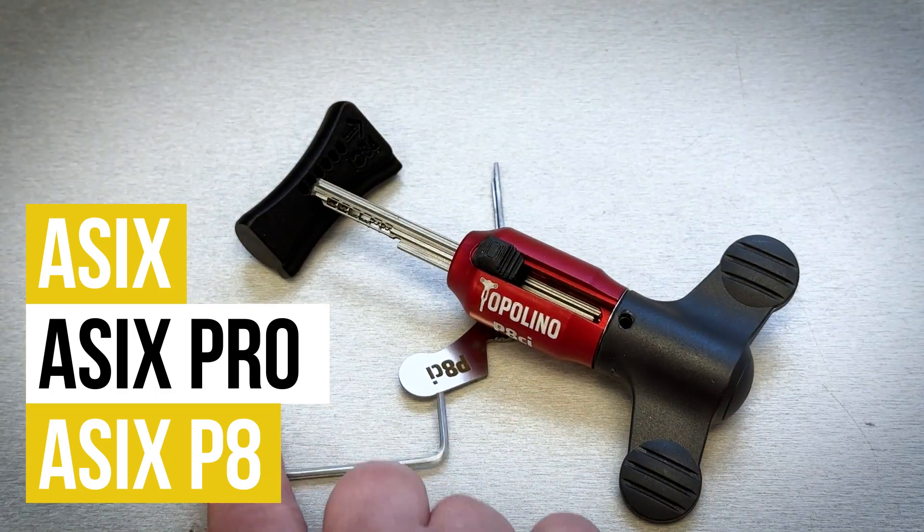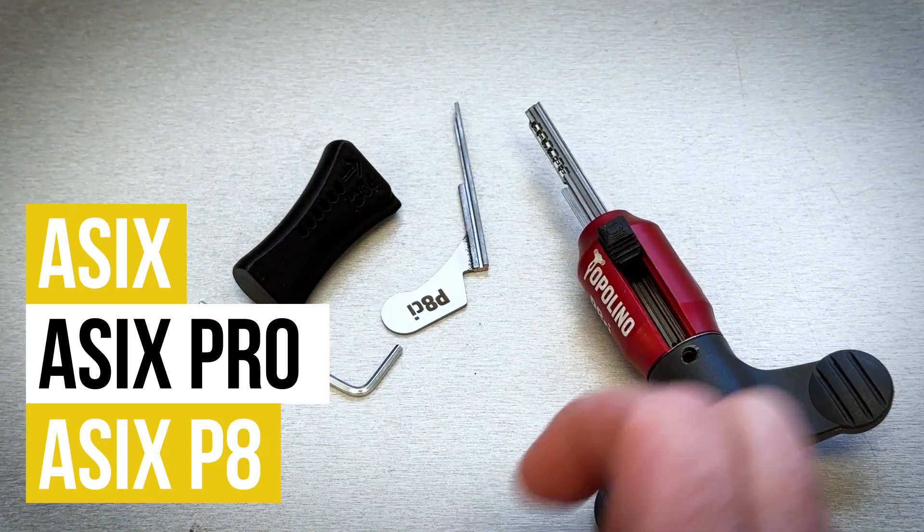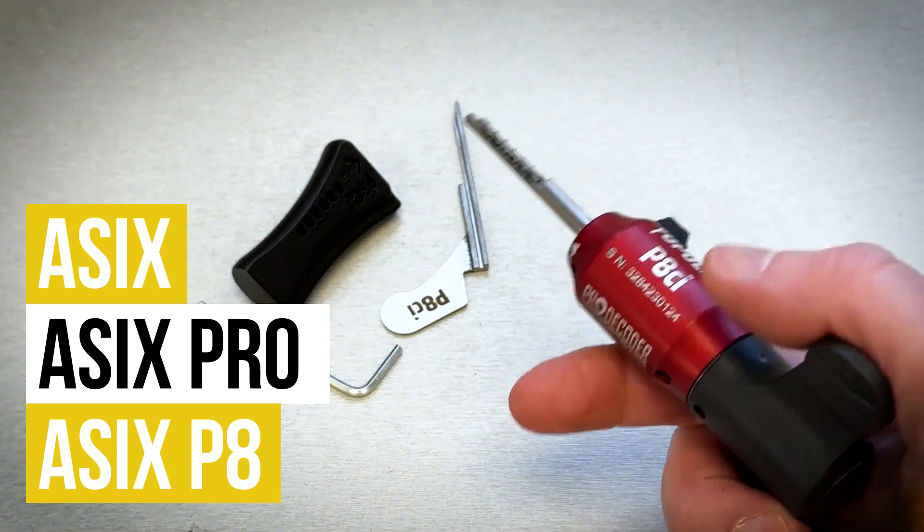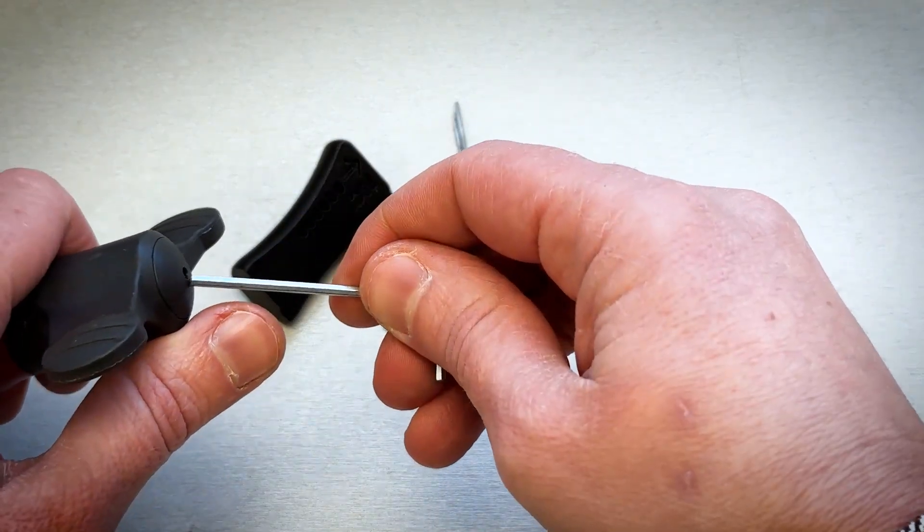This is how the tool comes to you: reset cap, tension, reset tool, and the tool itself. Every decoder comes with a unique serial number. Here on the back you will find spare pins.